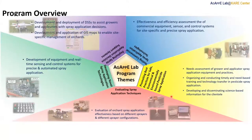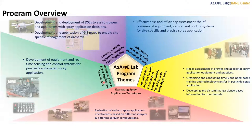There are five themes that guide my program: evaluating spray application techniques, testing commercial spray application technologies, promoting best practices for safe, economical, and environmentally sound pesticide spray application, developing overall spray application technologies, and deploying spray application decision support systems. My program website is still under construction and will provide more information on these themes.